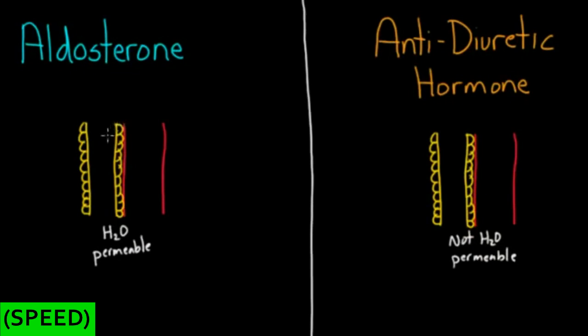And the way that aldosterone works, the main thing it does, is it's going to pull in sodium and spit out into the urine potassium. That's the main activity of aldosterone in terms of capturing sodium. And what happens is that sodium is not permeable to membranes, not able to cross membranes very easily.